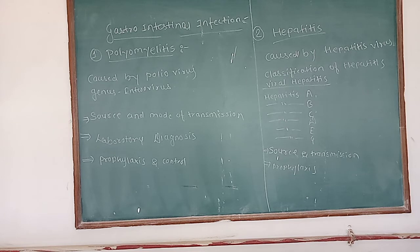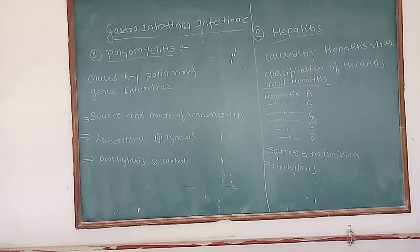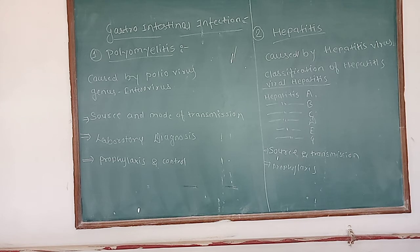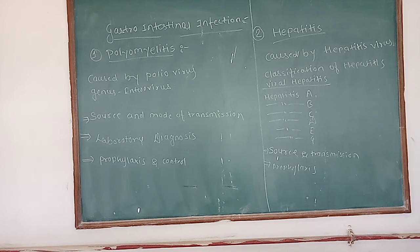Infection occurs readily under conditions of poor sanitation and overcrowding. The virus can be destroyed by adequate chlorination of water. For example, using bleaching powder in wells is a form of chlorination of water. This is the mode and source of infection of hepatitis A virus.